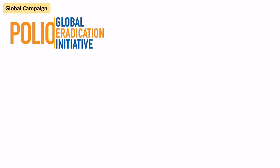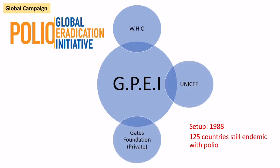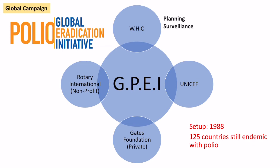In terms of the global campaign, we went from 125 endemic countries in 1988 — when the Global Polio Eradication Initiative started — because of combined efforts from the World Health Organization, UNICEF, the Gates Foundation (a private organization), and Rotary International, a non-profit NGO. They led planning, surveillance, expertise, and logistics around vaccination.